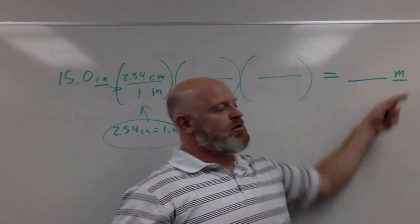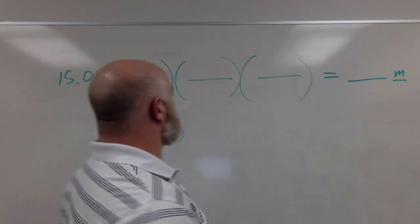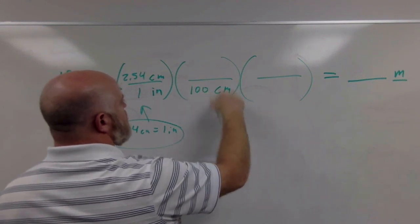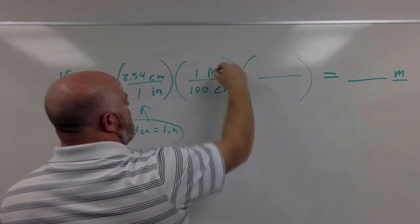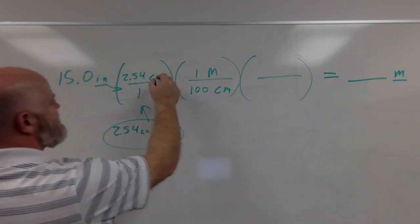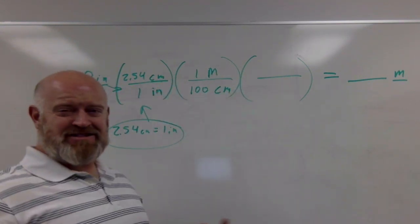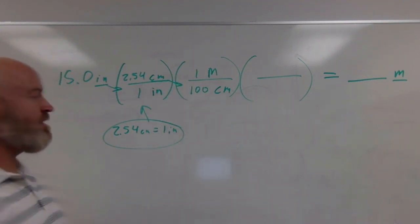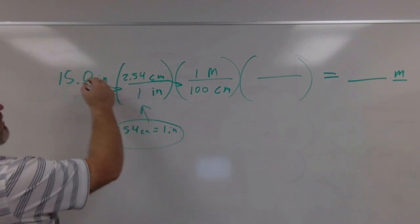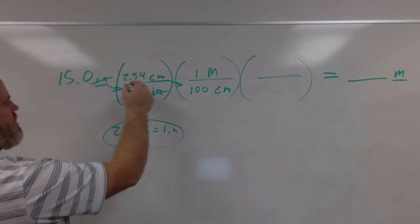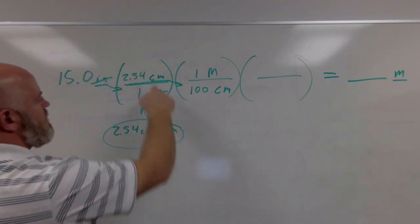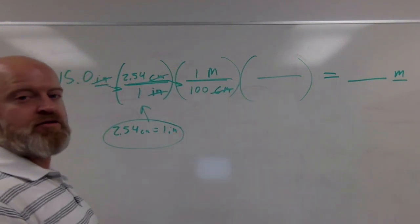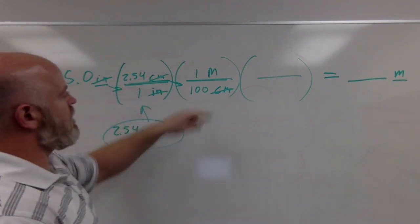Now I have centimeters and I'm trying to get to meters. I know that the prefix centi means 100, so for every 100 centimeters I have one meter. I had centimeters here, so I'm trying to get it to cancel, so I'm going to put the centimeters on the bottom. Mathematically, my label of inches cancels out, centimeters divided by centimeters cancel out, so my units are gone except for meters, which matches what I'm trying to solve for.